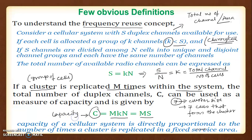If a cluster is replicated m times within the system, then m multiplied by S gives the total capacity. This is a simple equation showing what happens with frequency reuse — we improve capacity by replicating the cluster m times. The capacity of the cellular system is directly proportional to the number of times the cluster is replicated in the service area. The more we repeat, the better the capacity, but whether this introduces additional problems will be discussed in a later lecture. Thank you for watching.